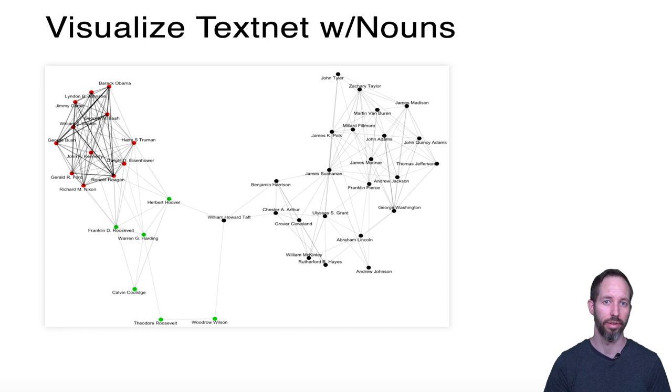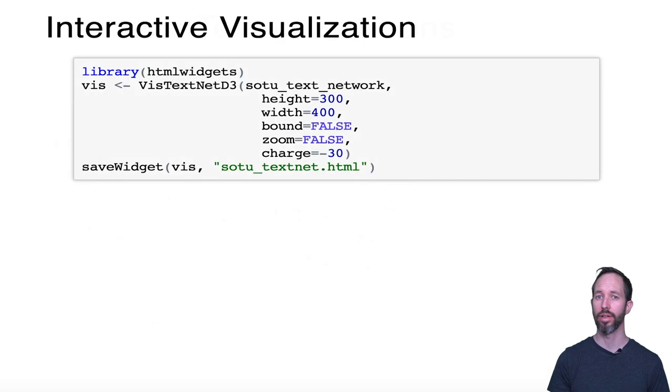We can also create really neat interactive visualizations in textnets using some D3.js graphics from the networkD3 package. So if you run this code, your R viewer will open up an interactive network plot. If you mouse over the nodes it will reveal the node labels, and you can drag the nodes to reposition the network and move it around and interpret it and play with it a little bit more.